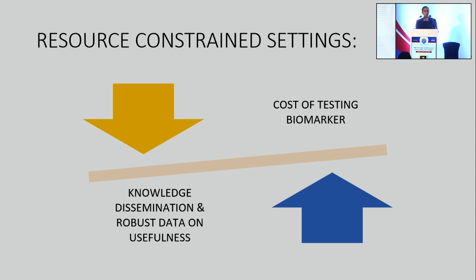I would add one more dimension to the cost restraint: knowledge dissemination. Once knowledge reaches the many parts of the country where we are involved in acute kidney care, only then will the use of biomarkers and therapies based on biomarkers get a boost. So high cost of biomarkers combined with poor knowledge dissemination will worsen resource constraints.